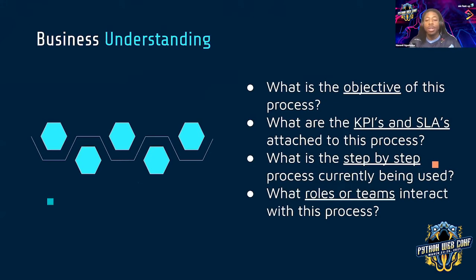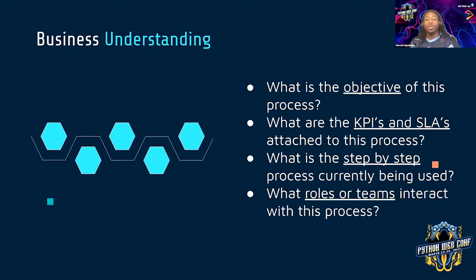Questions you can ask are: what is the objective of this process? What are the KPIs and SLAs attached to it? What is the step-by-step process currently being used? And what are the roles and teams that interact with this process? With all this information, you should be able to outline the problem and the current process for solving it. When you start bringing in machine learning and AI, a lot of things have to change by nature of the technology. I like to think of AI as a really small baby that you have to watch, monitor, and take care of.